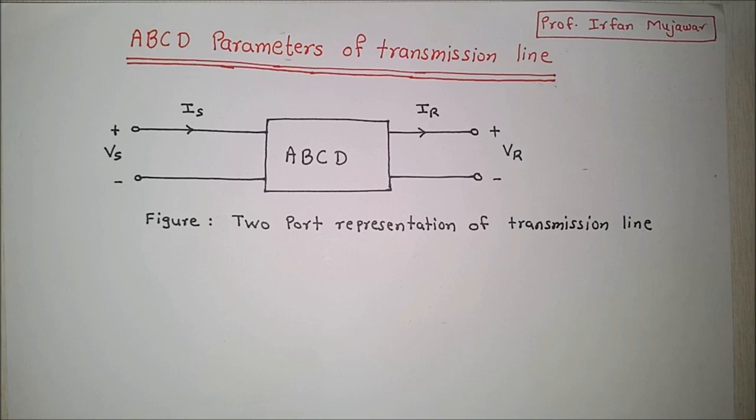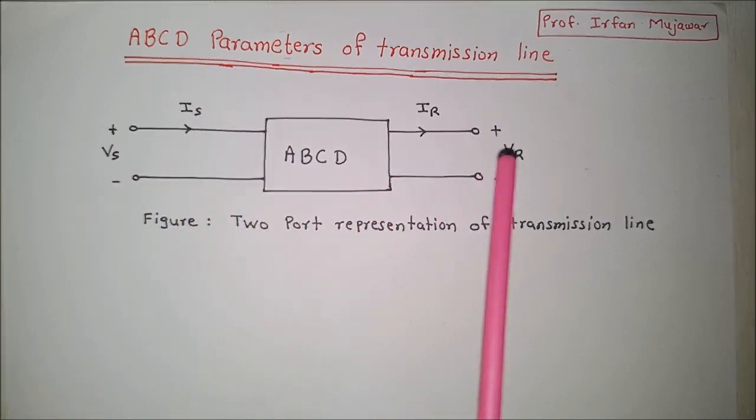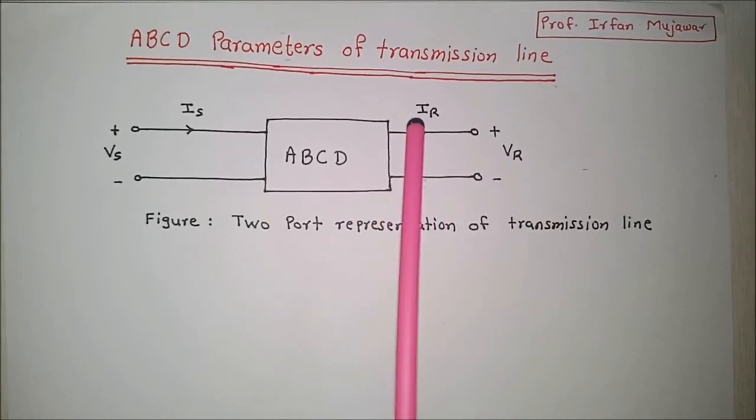We know that in any four terminal electric network which is linear, bilateral and passive, input voltage and input current can be expressed in terms of output voltage and output current. This principle we can use to express our sending end voltage and sending end current in terms of receiving end voltage and receiving end current.